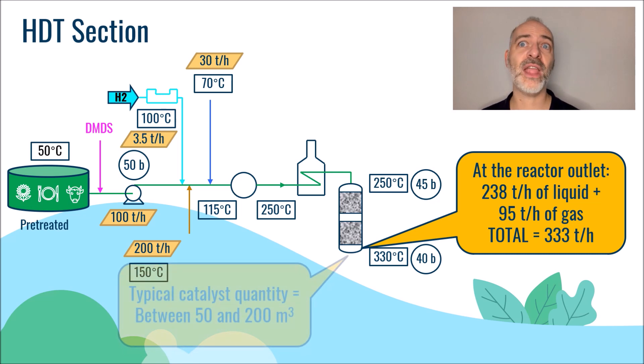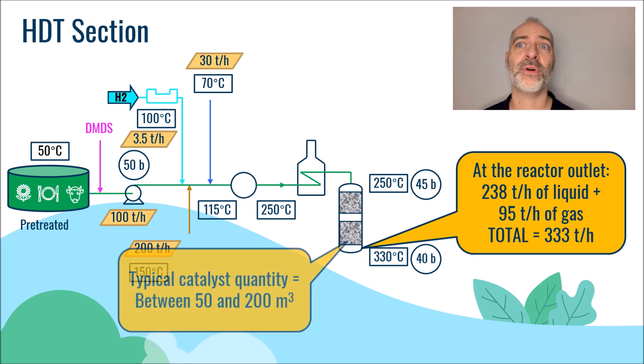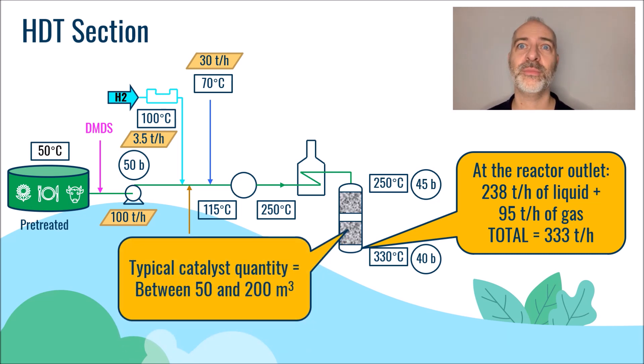Note that the total amount of catalysts in this section is typically 0.5 to 2 times the hourly volume fresh feed rate, or in our case, typically between 50 and 200 cubic meters of catalysts.